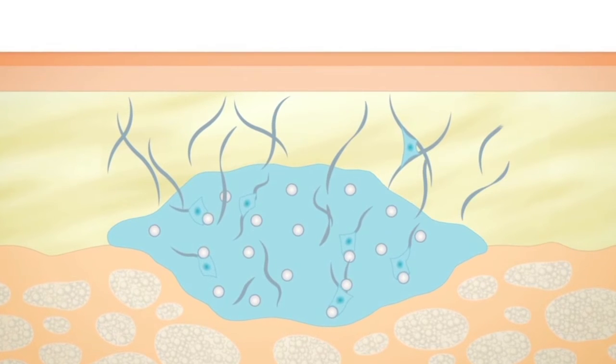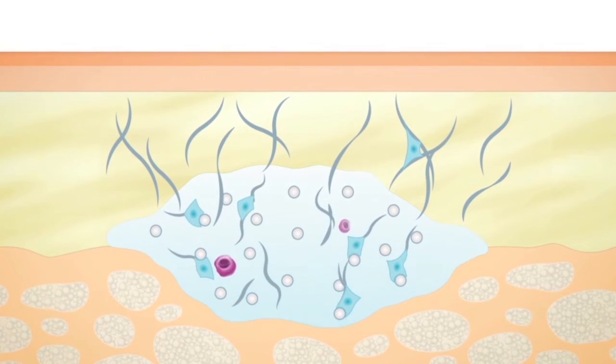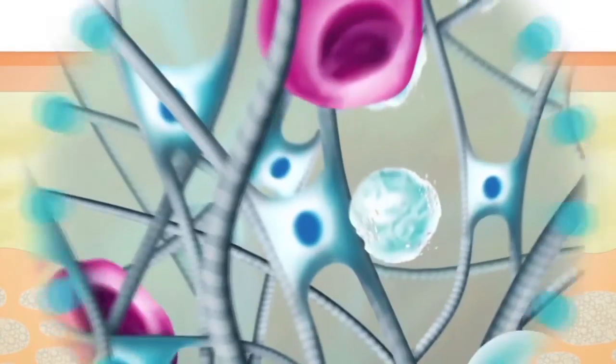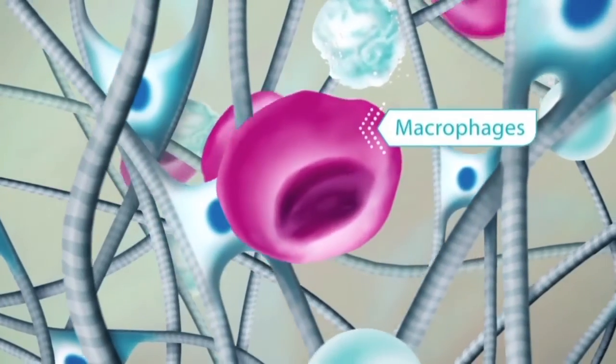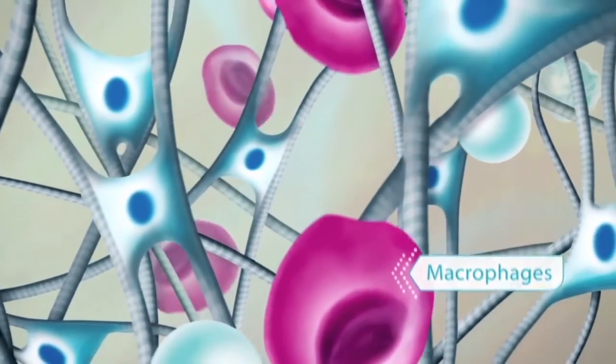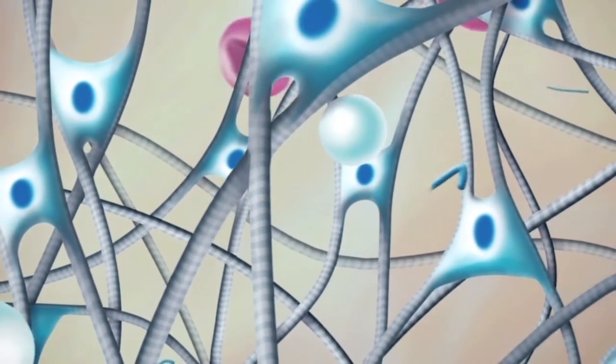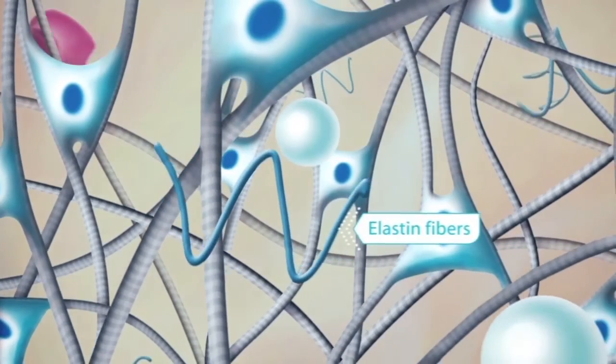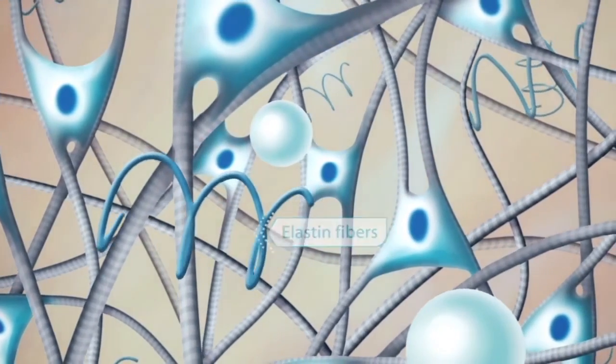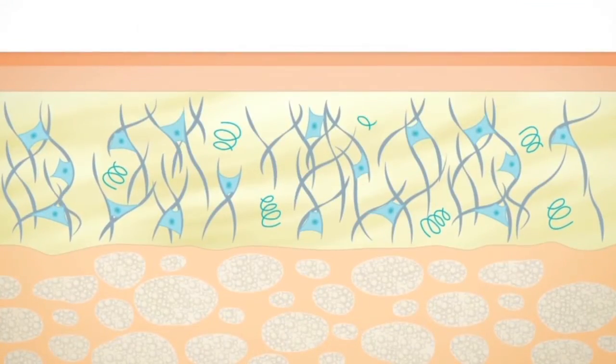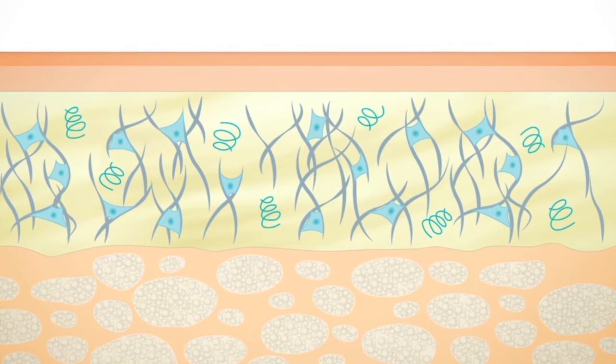In the dermis, the gel carrier begins to degrade simultaneously. Penetrating macrophages slowly dissolve the microspheres. Radiesse regenerates the fibroblast collagen network and additionally stimulates elastin production. In this way, the skin regains structural support and elasticity.